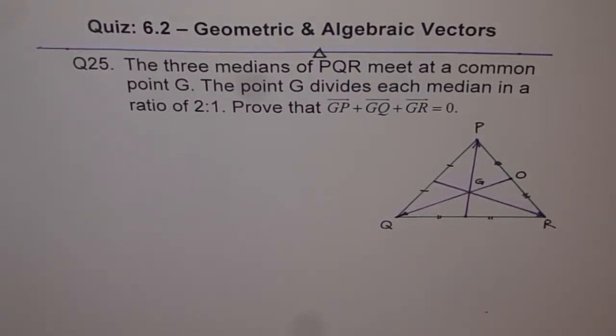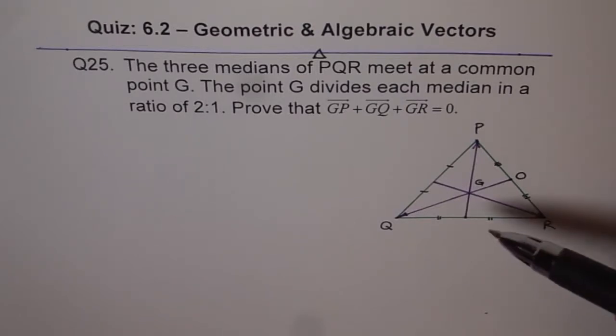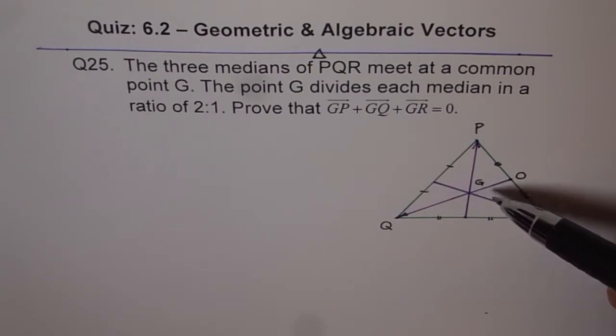This is a difficult problem and it requires a bit of thinking. Question 25. The three medians of triangle PQR meet at a common point G. The point G divides each median in the ratio of 2 is to 1.